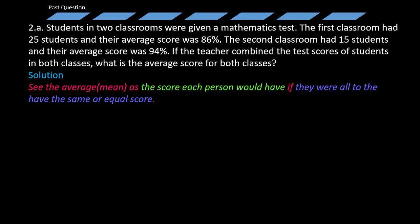Okay, so now they said the first classroom had 25 students and their average score was 86 percent. So it means that if all of them were to have the same score, each person would have gotten 86%. Thus we can get the total score for that class by multiplying 25 by 86%, and that would give us 2150%.